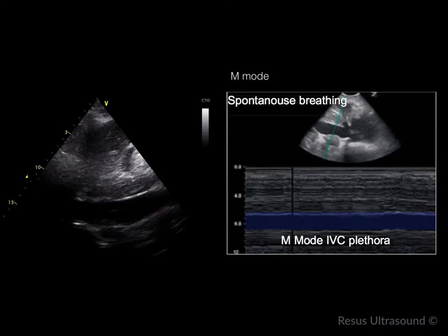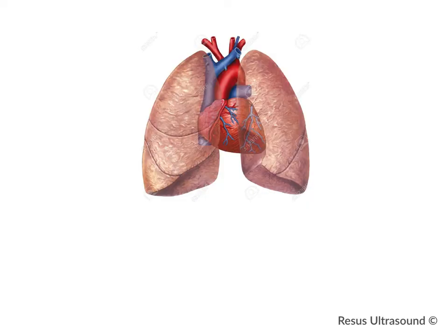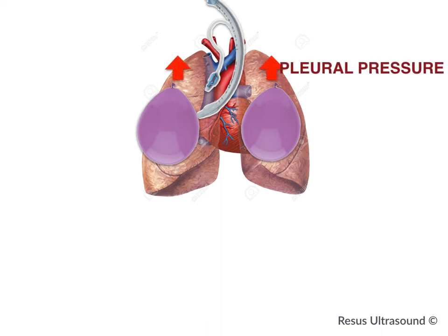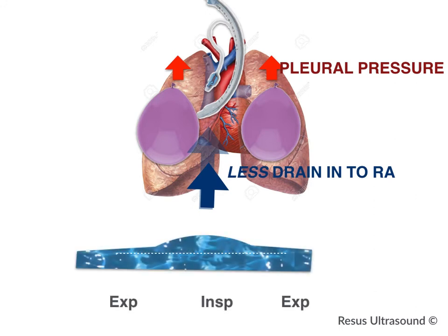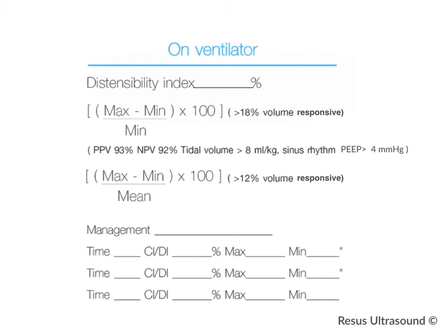What if the patient is intubated or on mechanical ventilation? When you intubate the patient, you blow up the patient's lungs in the inspiration phase, which increases pleural pressure. As a result, the IVC cannot drain into the RA and actually distends in the inspiration phase. If the distensibility variation is more than 18%, it means the patient is likely volume responsive — equivalent to when a spontaneous breathing patient has a collapsed IVC. The tidal volume must be more than 8 mL/kg, the patient must be in sinus rhythm, and PEEP should be 4 mmHg.